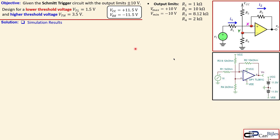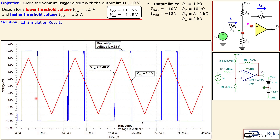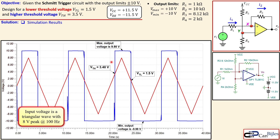Now let's look at the simulation results. In the SPICE simulator the circuit is set up with R1 = 1 kΩ, R2 = 10 kΩ, R3 = 8.12 kΩ, R4 = 2 kΩ, using the TL081 op-amp with Vcc = +11.5 V and Vee = −11.5 V. The input is a triangular wave with a peak of 8 V at 100 Hz (red curve) and the output is the blue curve. The simulated output reaches a maximum of 9.98 V and a minimum of −9.98 V, very close to our target of ±10 V.